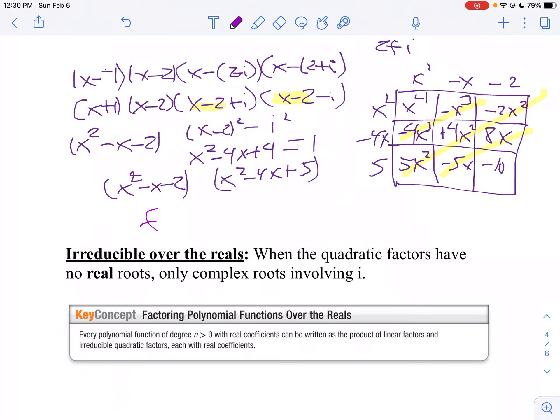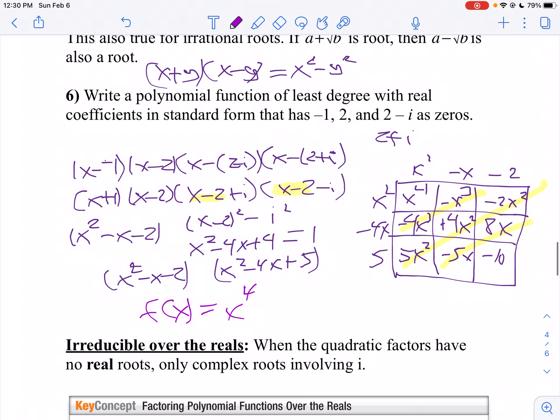f(x) equals x to the fourth, then negative 4 minus 1 would be negative 5x cubed. 5 plus 4 minus 2 would be positive 7x squared. Negative 5 plus 8 would be positive 3x minus 10.